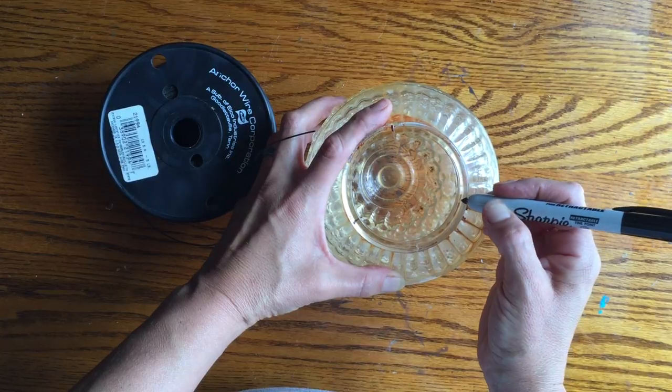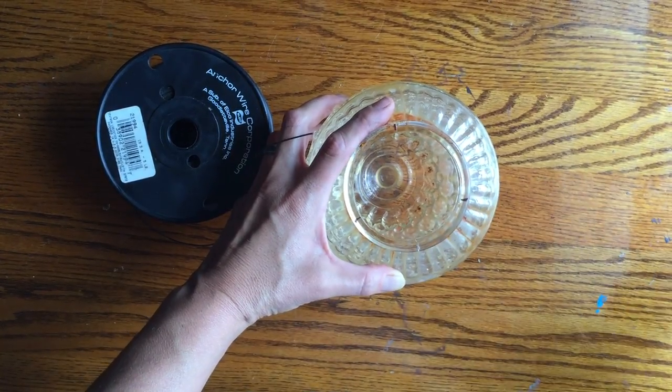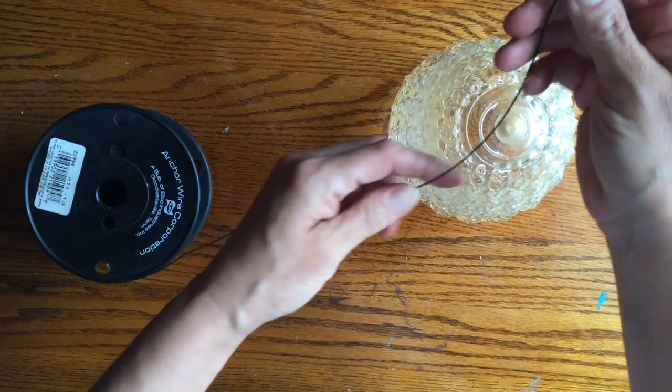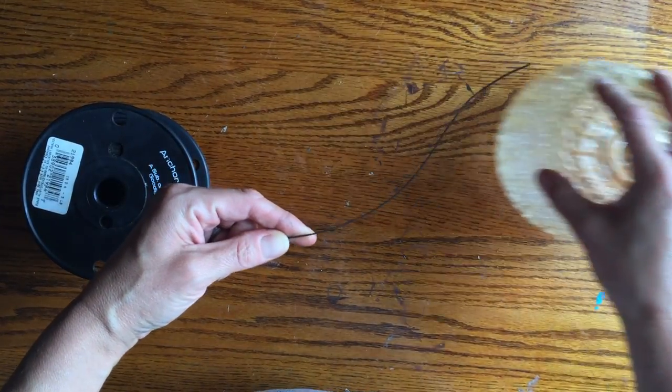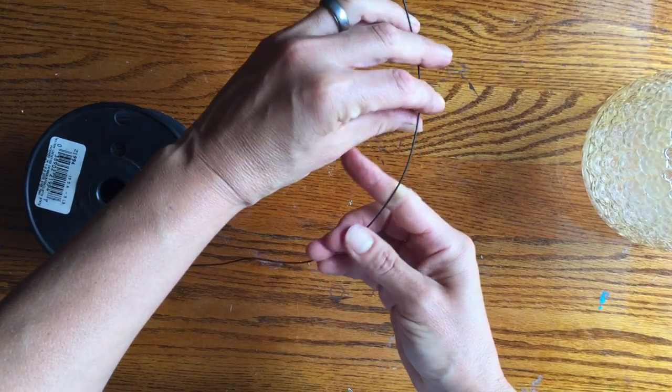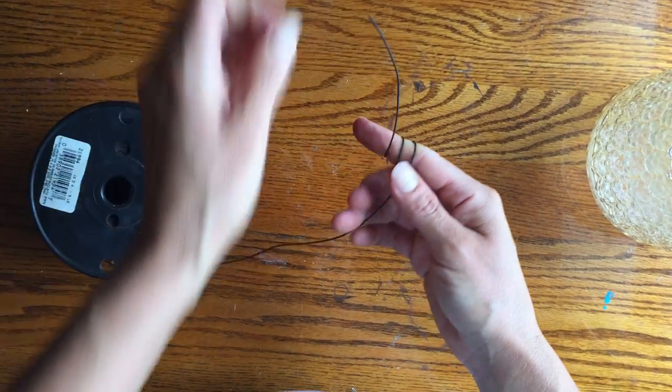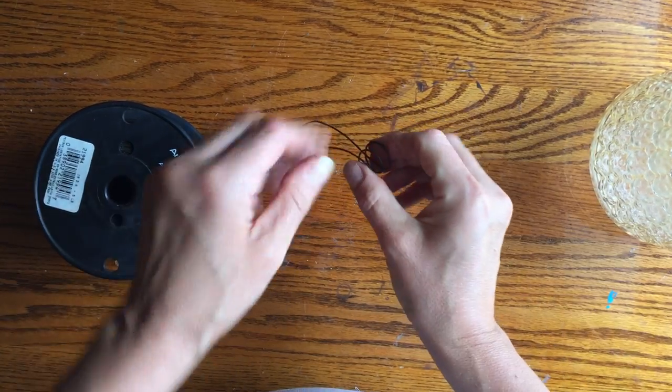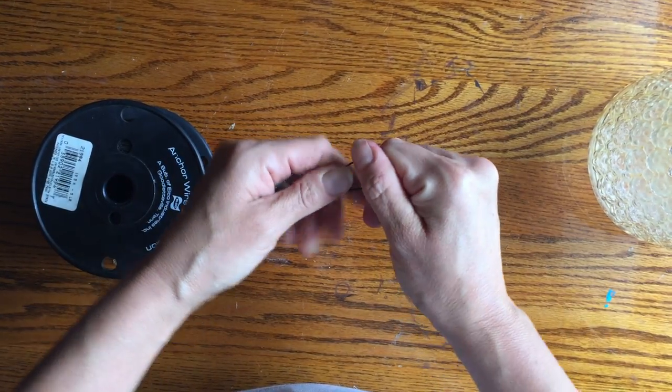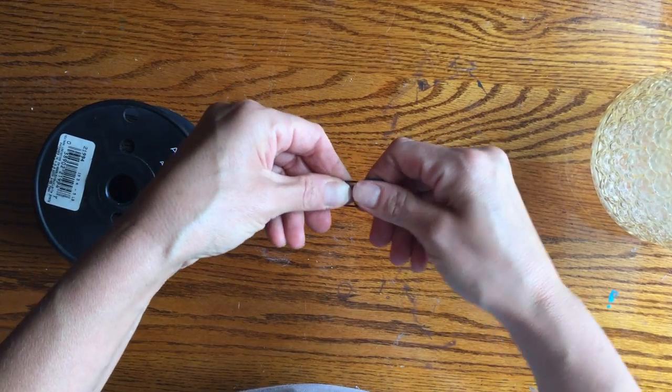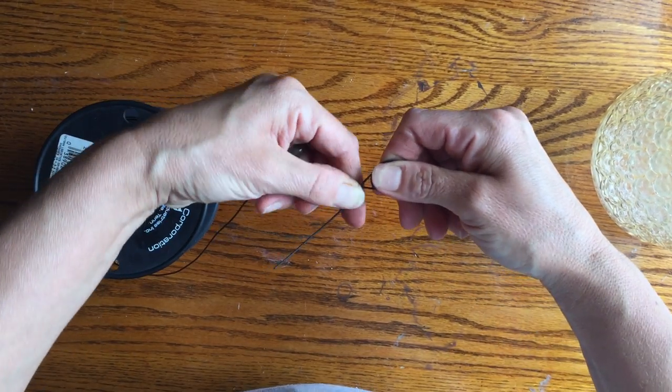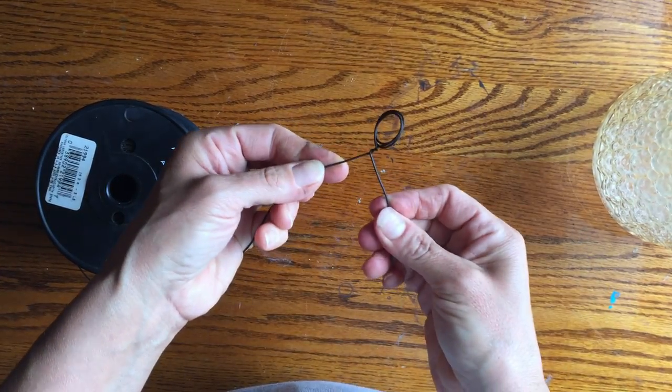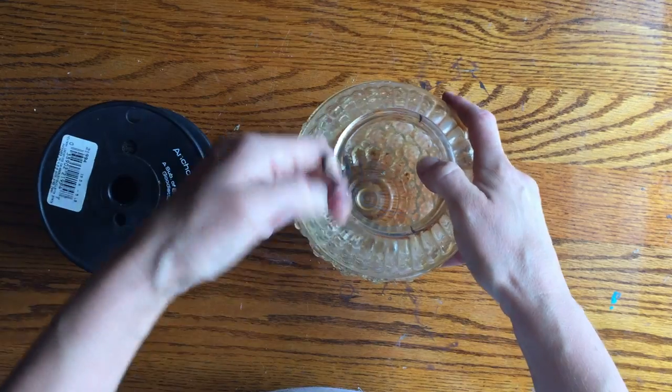Now I'm going to grab my wire a little ways from the end. I'm going to wrap it around my finger, one, two, three, pull it off, and I'm going to squeeze them together till I get the little loops together, and I'm going to twist just like that.